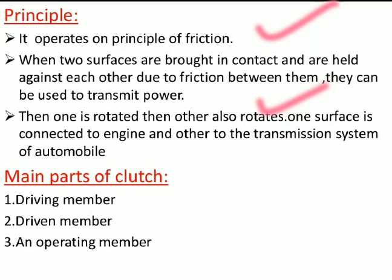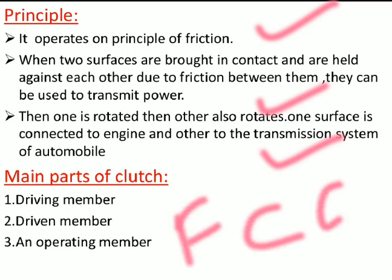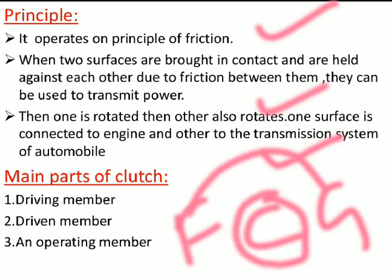When one surface is rotated, the other also rotates. One surface is connected to the engine and the other to the transmission of the automobile. The Clutch is a linking element between the Flywheel and the Gearbox — it simply takes the power from the Flywheel and transmits it to the Gearbox.